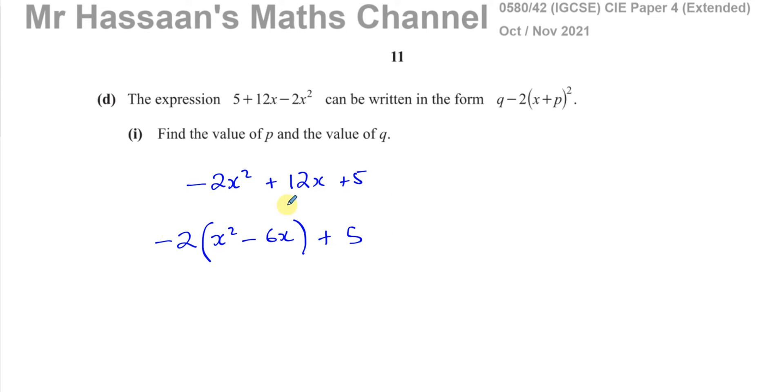Some people like to take out the minus 2 from all three terms and have -2, then x², -6x and then -5/2. But I like to keep it in this form. I find it much easier to deal with.